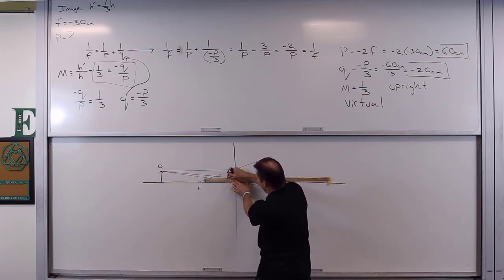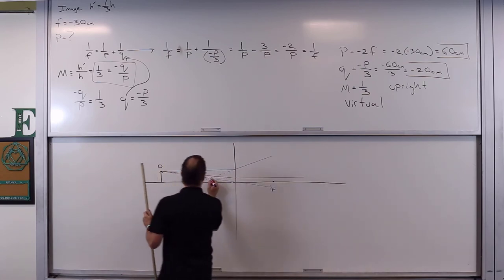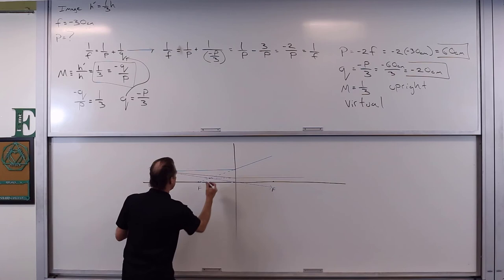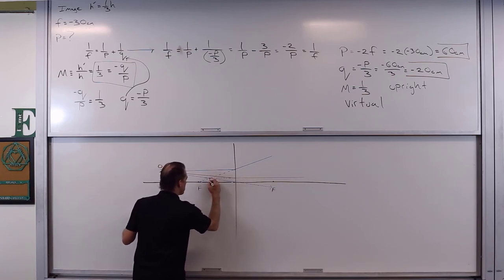Like that. What do we do? We trace that back. And what happens? Everything intersects right there. Go ahead and translate that down to the principal axis. There's our image.